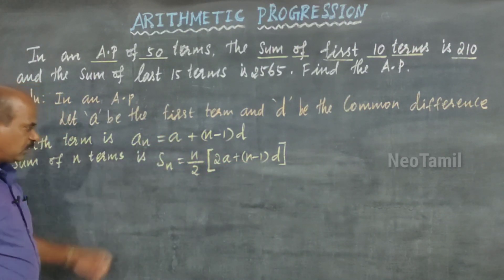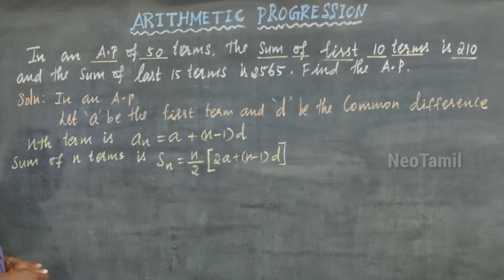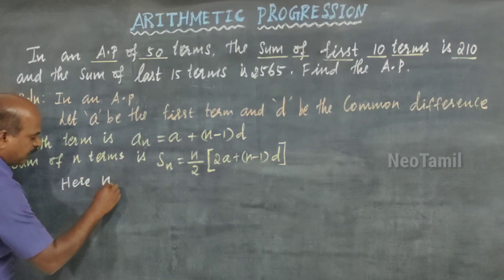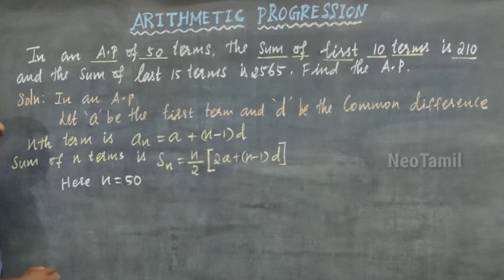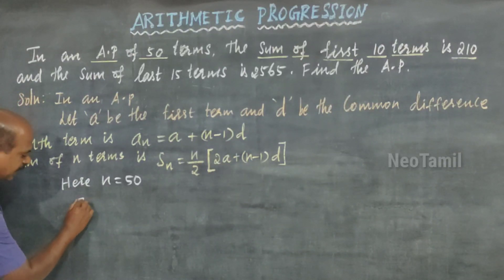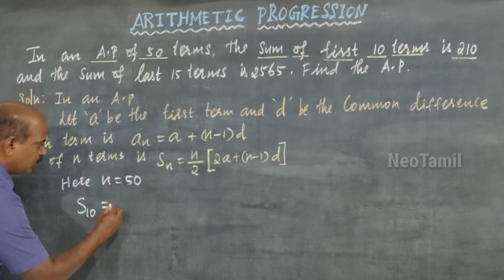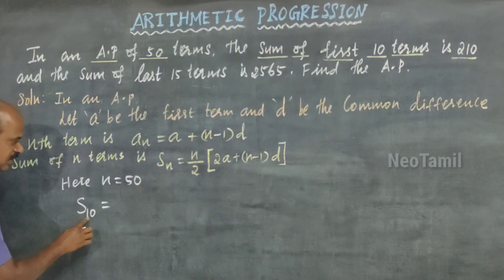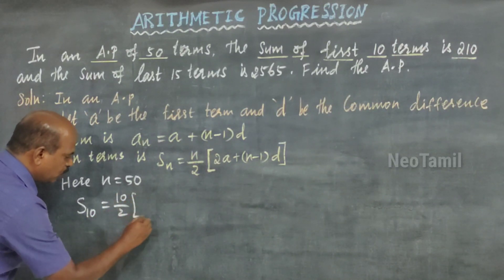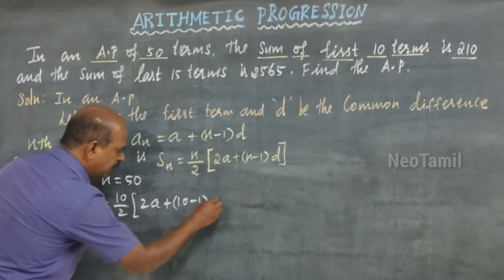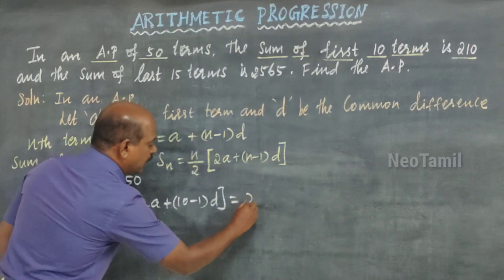Now I am going to use the first condition. The number of terms n is equal to 50. Sum of the first 10 terms is S10. Using the formula: S10 = (10/2)[2a + (10−1)d], and this equals 210.